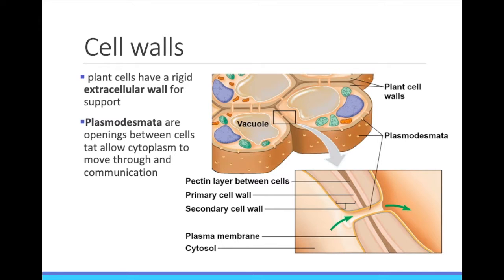Plant cells still need to be able to communicate and share nutrients, so there are small openings in the cell walls to connect neighboring cells. These are called plasmodesmata, and they are cytoplasm-to-cytoplasm connections of plant cells. Water and other small molecules can pass through these connections freely.